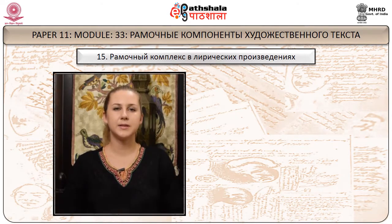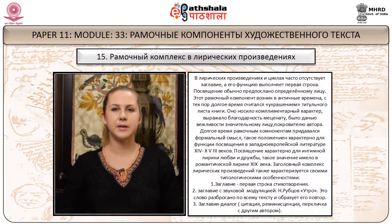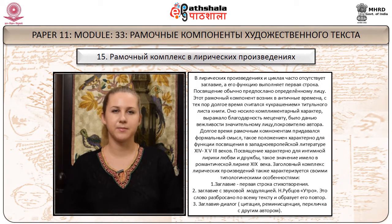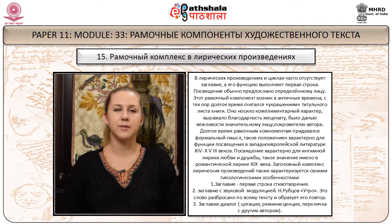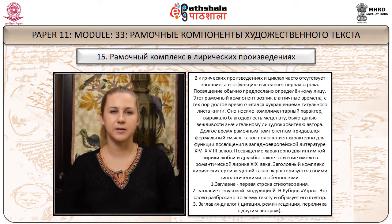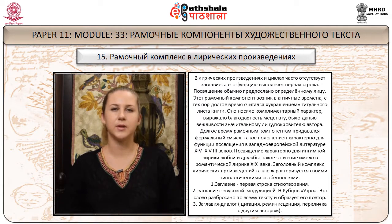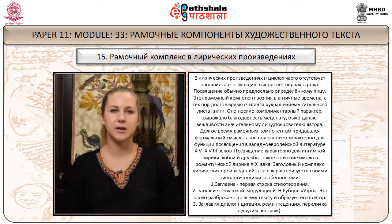Рамочный комплекс в лирических произведениях. В лирических произведениях и циклах часто отсутствует заглавие, а его функцию выполняет первая строка. Посвящение обычно предпослано определённому лицу. Этот рамочный компонент возникает в античные времена. С тех пор долгое время считался украшением титульного листа книги. Оно носило комплементарный характер, выражало благодарность меценату, было данью вежливости значительному лицу, покровителю автора. Долгое время рамочным компонентам придавался формальный смысл – такое положение характерно для функции посвящения в западноевропейской литературе XIV–XVIII веков.